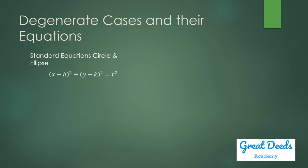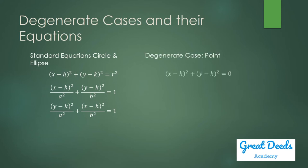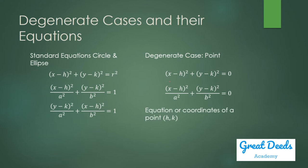These are the standard equations for a circle and ellipse. The degenerate case will arise when the equations appear such that instead of these terms being equal to one or equal to r squared, they become equal to zero. These terms are equal to zero only when x is equal to h and y is equal to k. In which case, what you have here is simply the coordinates of a point.